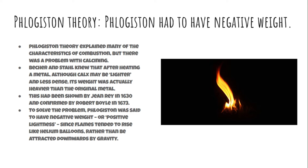The theory seemed plausible, but there was a real problem with calcinating metals. Becher and Stahl both knew that after heating a metal, although the calx may appear lighter and less dense, its weight was actually heavier than the original metal. This had been shown by Jean Rey in 1630 and confirmed by Robert Boyle in 1673. To solve this problem, phlogiston was said to have negative weight or positive lightness — since flames rise, like a helium balloon, phlogiston was said to have negative mass, so when it left a substance the remaining material became heavier.